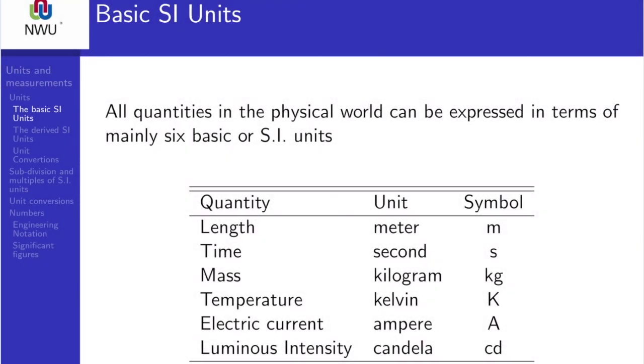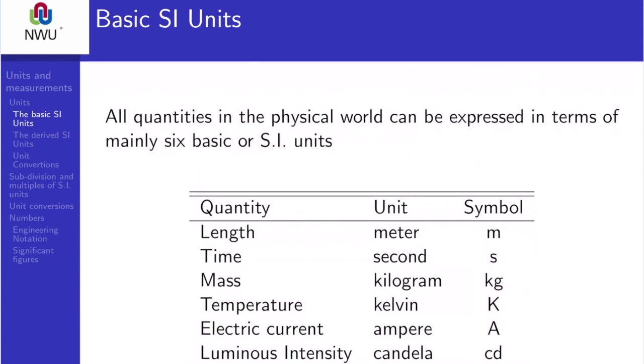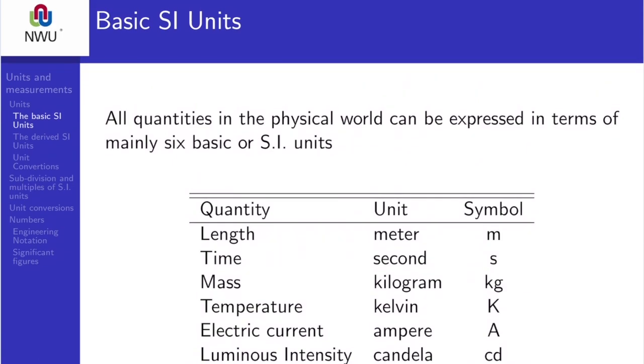There are six basic quantities in physics and that's length, time, mass, temperature, electric current, and the luminous intensity. The SI units or the base SI units are shown.